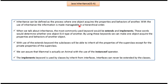Using inheritance, one object can acquire all properties and behaviors of another object. When we talk about inheritance, the most commonly used keywords are extends and implements. Using these keywords, we can make one object acquire all the properties and behaviors of another object. Using the instanceof operator, we can verify that mammal is actually an animal. This is about Java Inheritance Is-A Relationship. Thanks for watching.